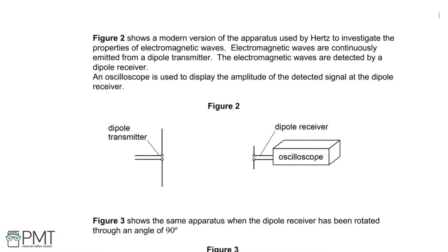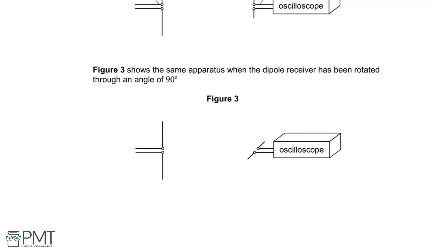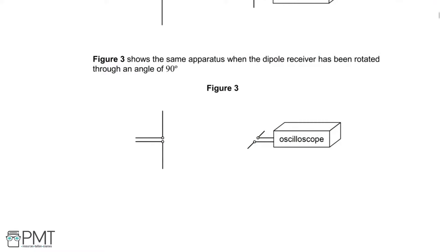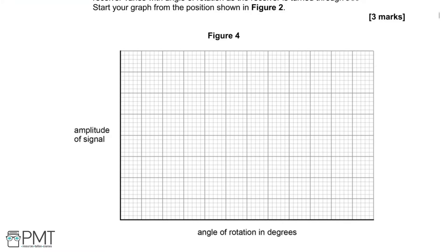Figure 2 shows a modern version of the apparatus used by Hertz to investigate the properties of electromagnetic waves. Electromagnetic waves are continuously emitted from a dipole transmitter and detected by a dipole receiver. An oscilloscope displays the amplitude of the detected signal at the dipole receiver. Figure 3 shows the same apparatus when the dipole receiver has been rotated through 90 degrees — you can see the two lines next to the oscilloscope are now horizontal rather than vertical. Sketch a graph to show how the amplitude detected varies with angle of rotation as the receiver is turned through 360 degrees, starting from the position shown in figure 2.